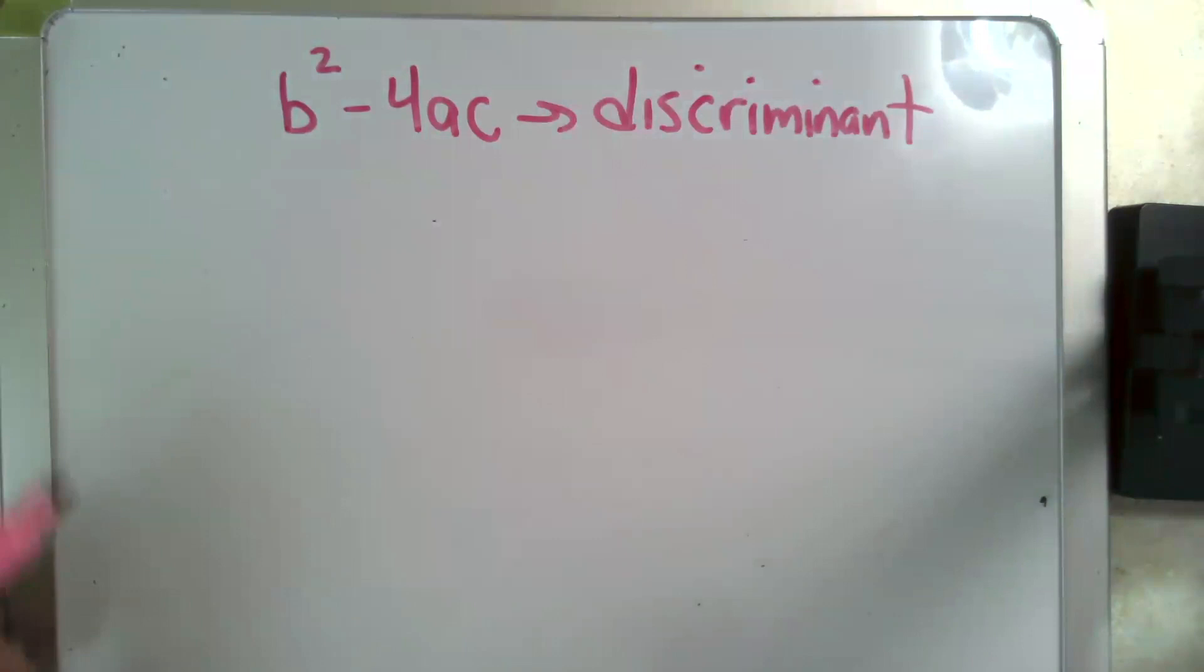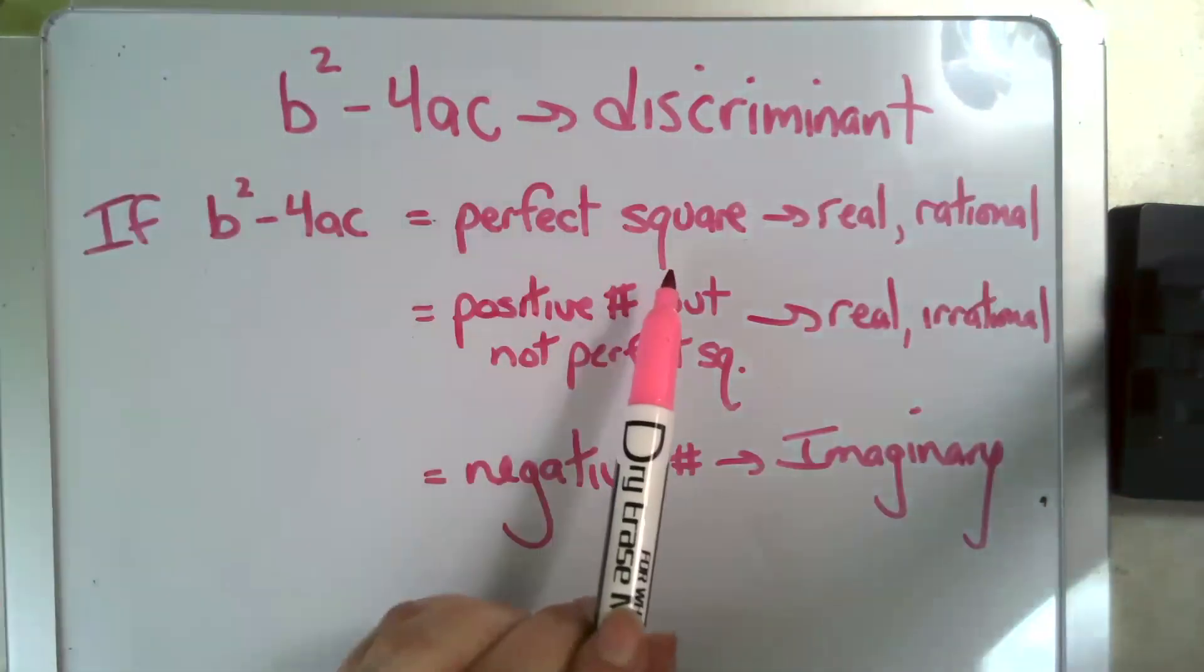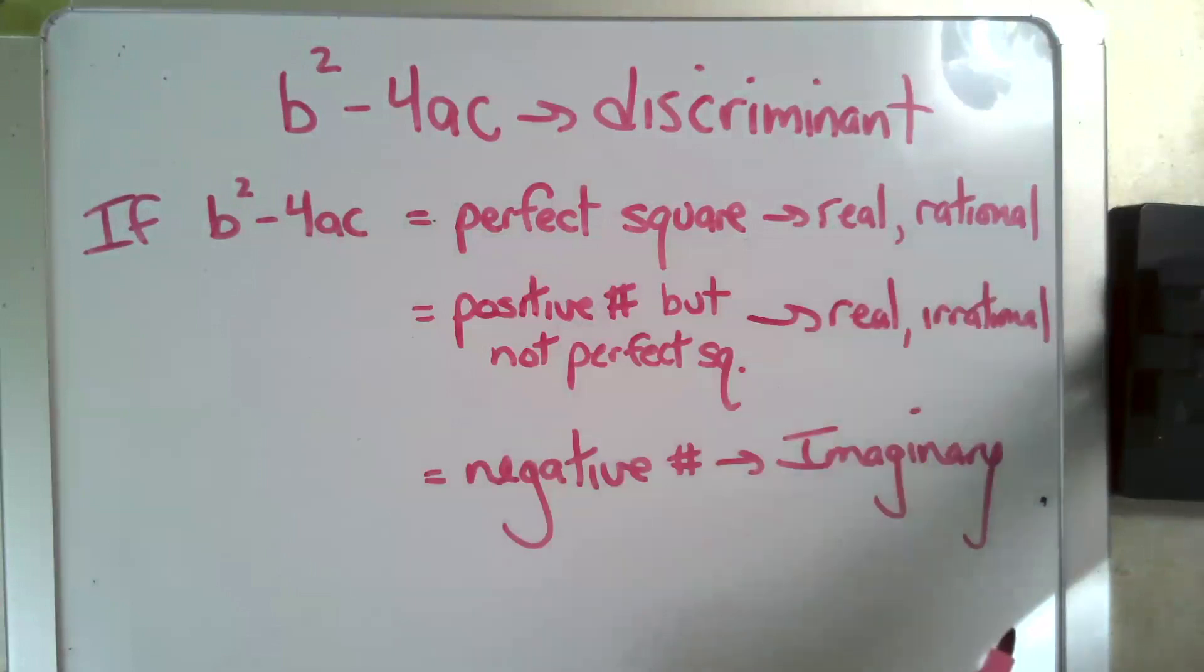If b squared minus 4ac is a perfect square, I have real rational answers, or what we would classically say factorable, even though that's not the right term. If they're positive numbers, but they're not perfect squares, they will be real, but they will be irrational. There will be square roots involved. And if b squared minus 4ac is negative, then we have imaginary answers.